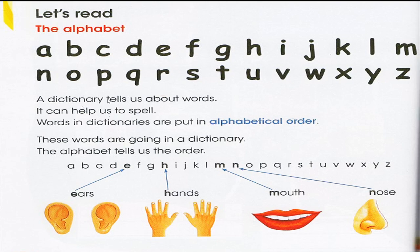A dictionary tells us about words. It can help us to spell, and it can also tell us the meaning of the words. Words in the dictionary are put in alphabetical order, from A to Z.